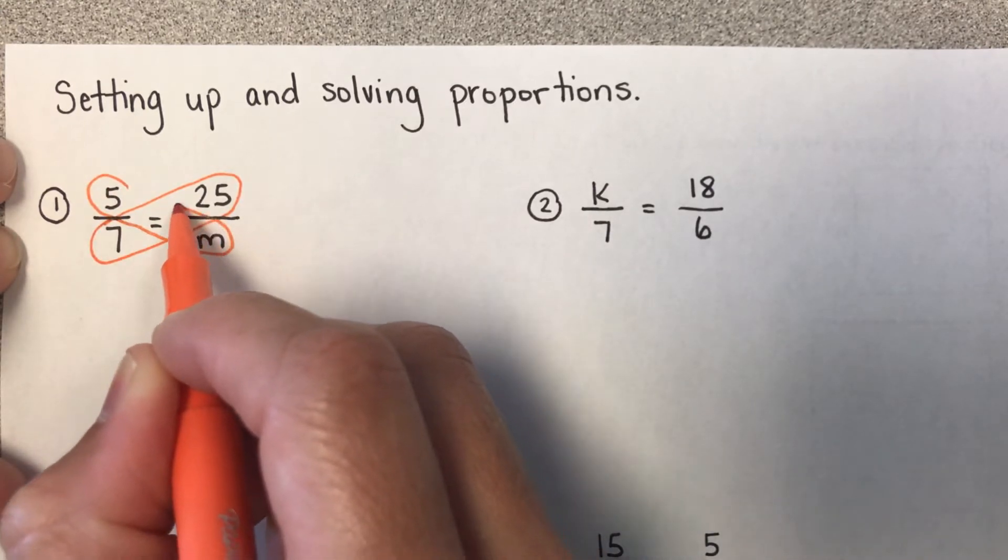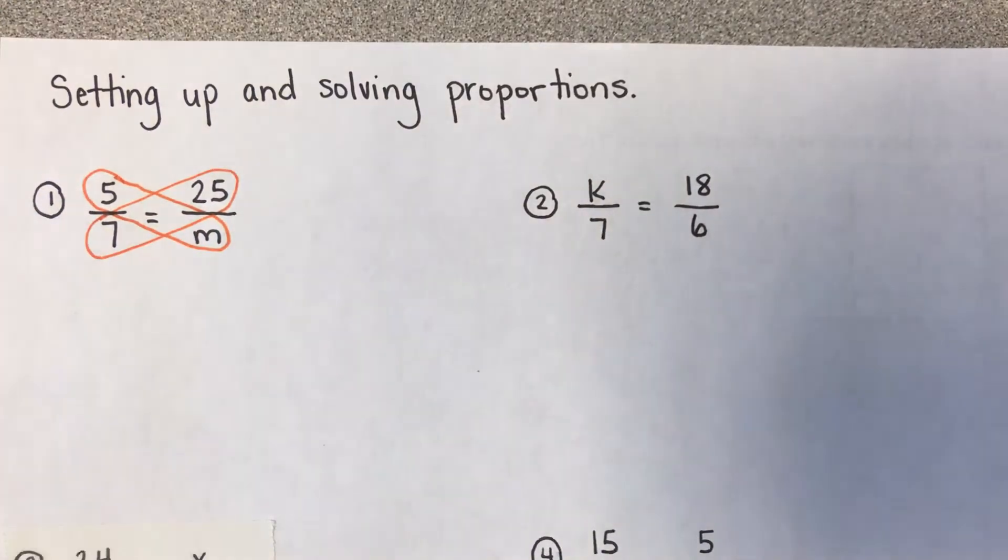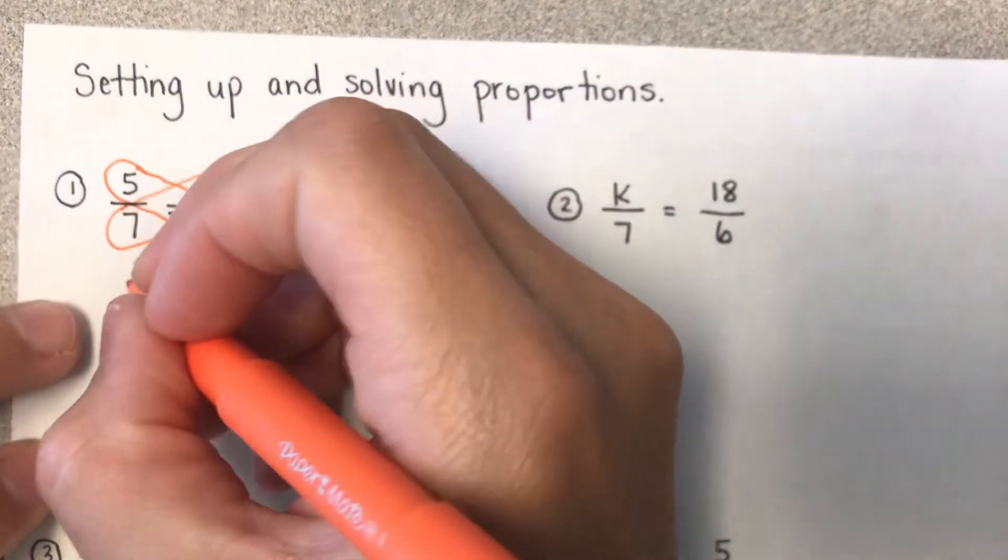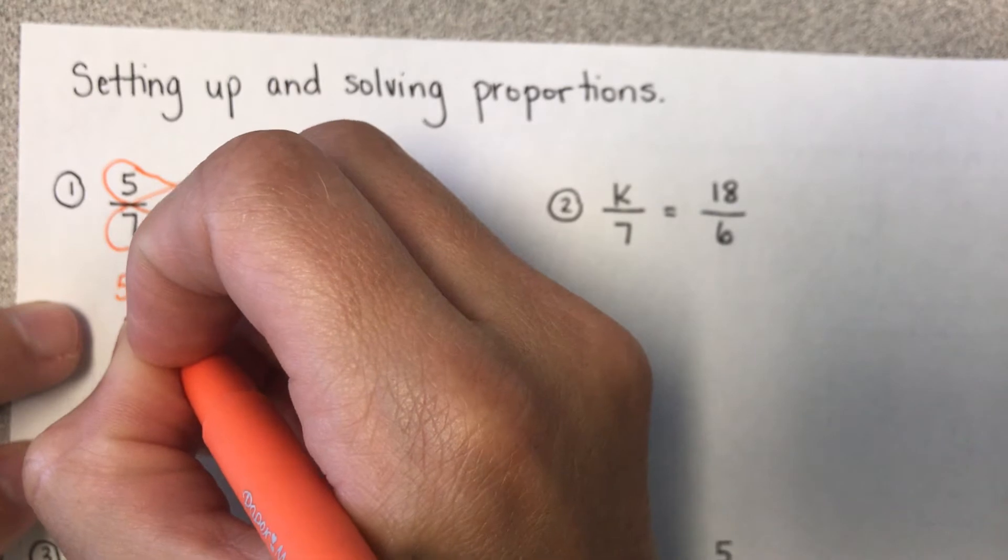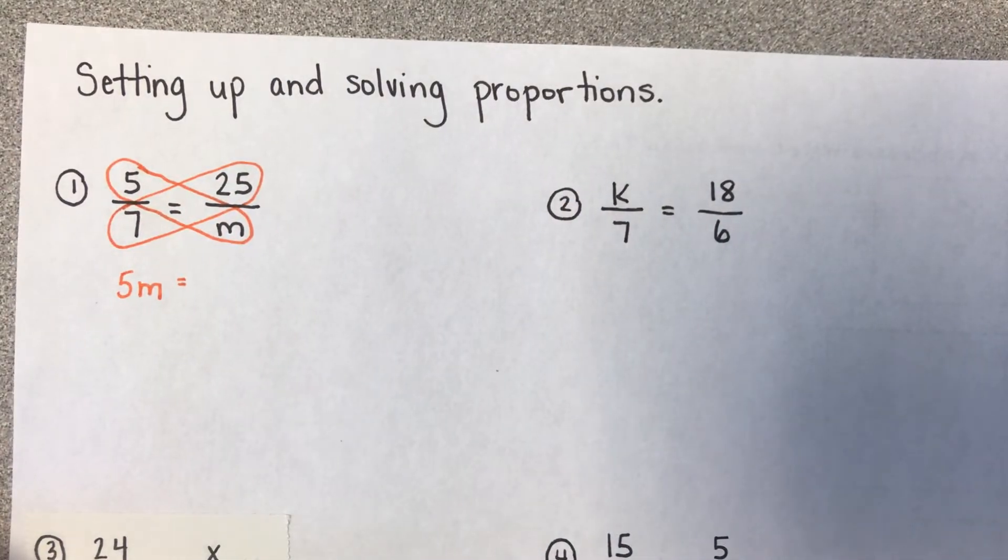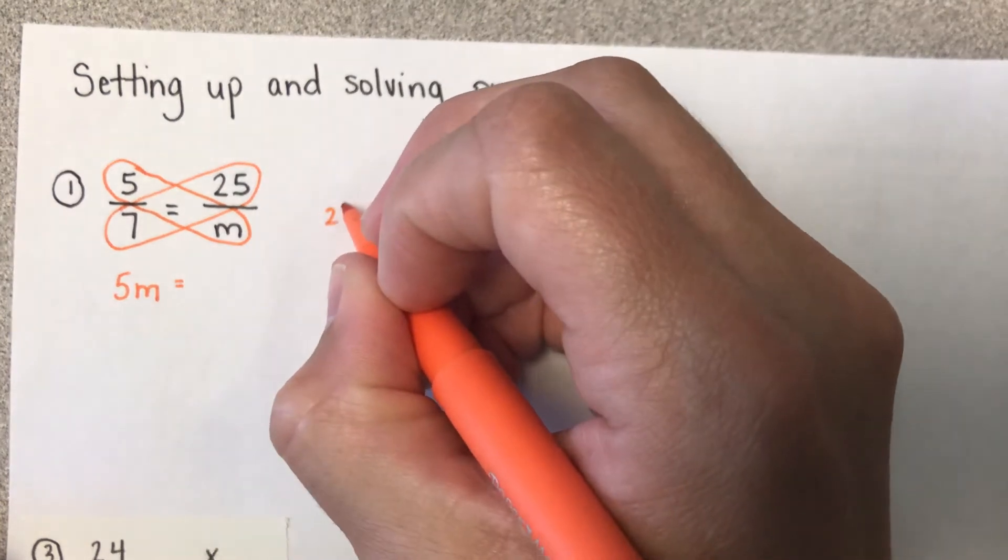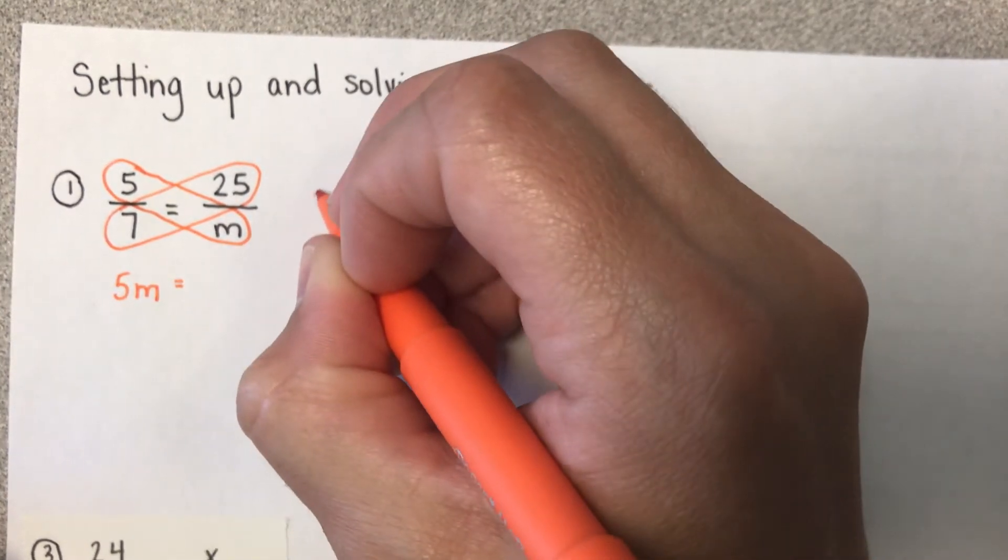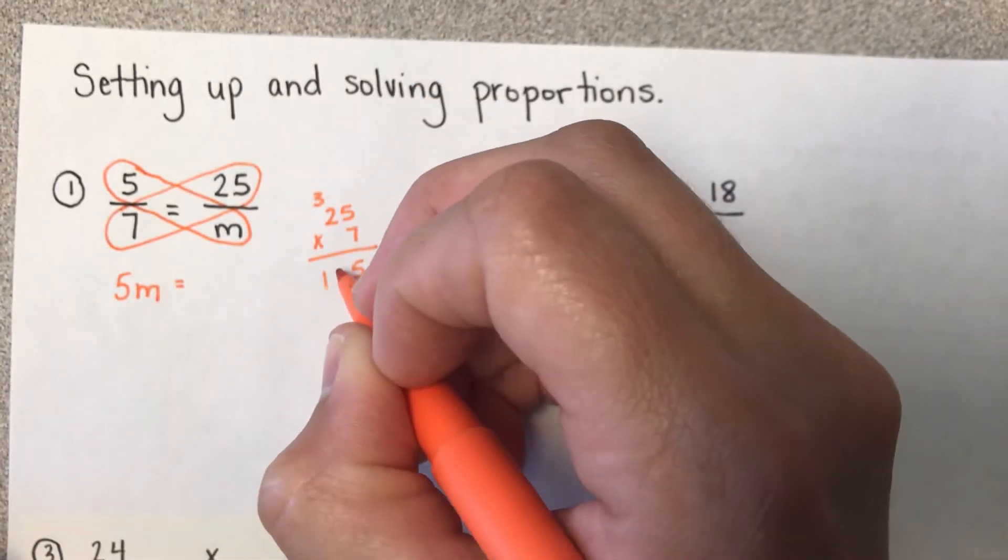So we draw those. If I do 5 times m, we know that that is 5m. If I do 7 times 25, so 25 times 7, that would give me 175.